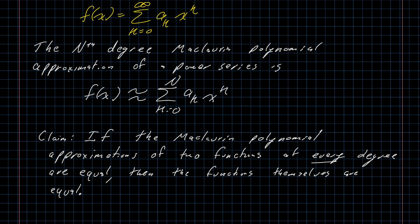I claim, and I'm not going to prove this, in fact I'm going to take this as a definition. If the Maclaurin polynomial approximations of two functions at every degree are equal, then the functions themselves are also equal. Given any function, if you can write a Maclaurin polynomial, and you can turn that Maclaurin polynomial into a power series, then the power series is the function.